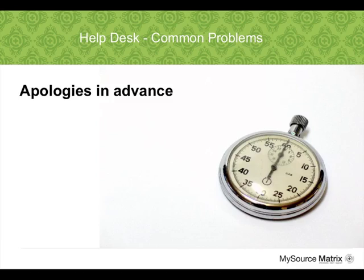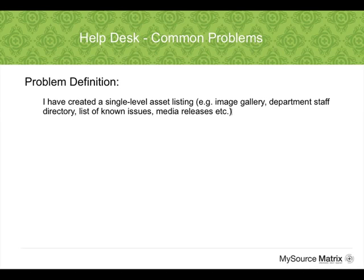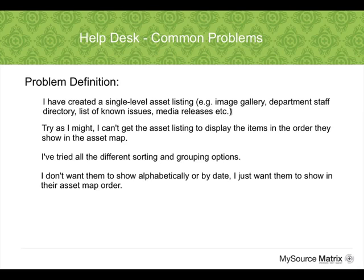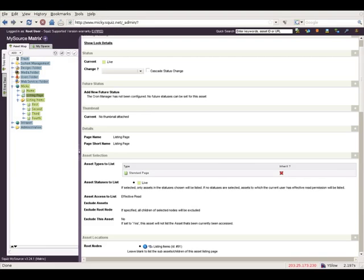Our first question that comes up fairly frequently: why won't my asset listing display in the same order as the asset map? Has anybody wrestled with this one? I have created a single level asset listing — it might be an image gallery, a list of known issues, or media releases. And no matter what I do, I can't get the asset listing to show up in the same order as it is in the asset map. I've tried all the different sorting and grouping options, and I just want them to show up how they are in the asset map.